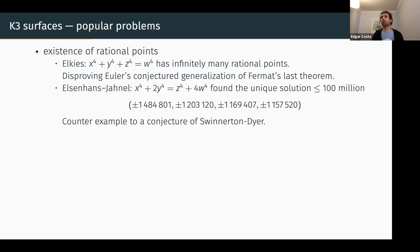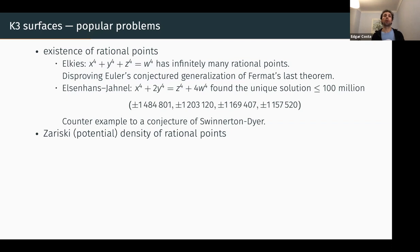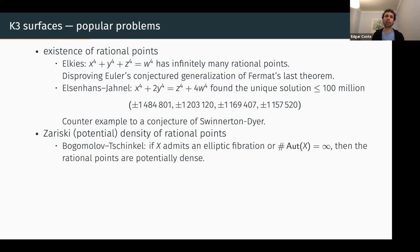Maybe I don't have rational solutions — maybe I should think about what happens when I change my base field, or if I have rational points, do I have a lot of them or not? We can ask about the density of rational points, or potential density, which means after a base change. A statement from Bogomolov and Tschinkel tells us that if X has extra structure — for example an elliptic fibration, or the automorphism group is infinite — then rational points are potentially dense.